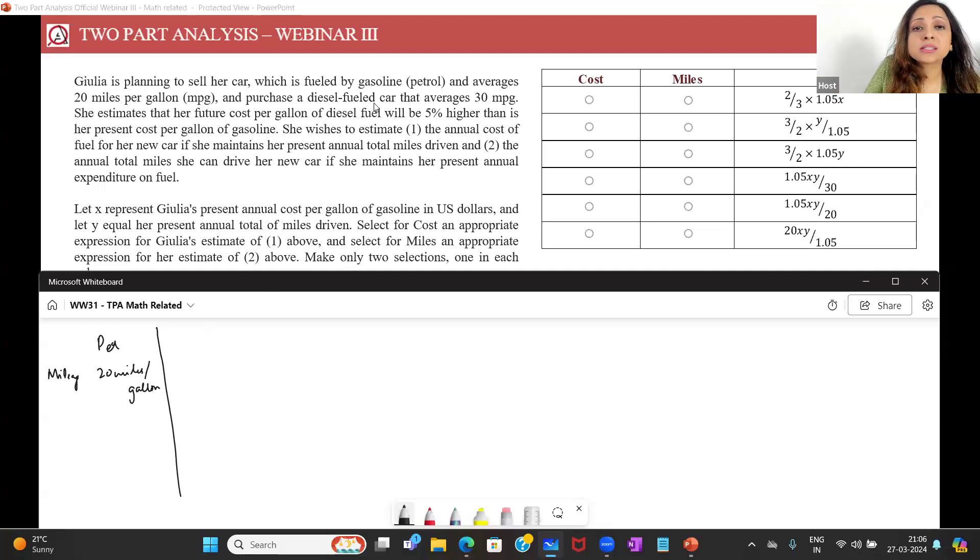Okay, and purchase a diesel fuel car that averages 30 miles per gallon. Make sure that you put down the information in a column, comparing petrol versus diesel right next to each other, so then the chances of making an error are very less.